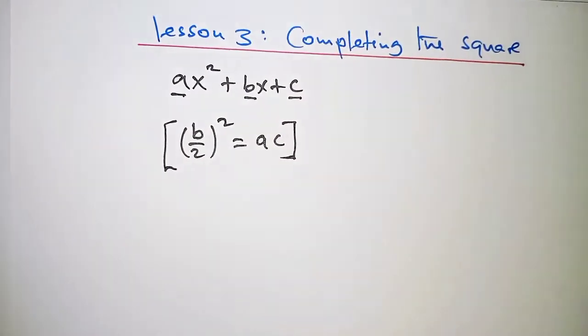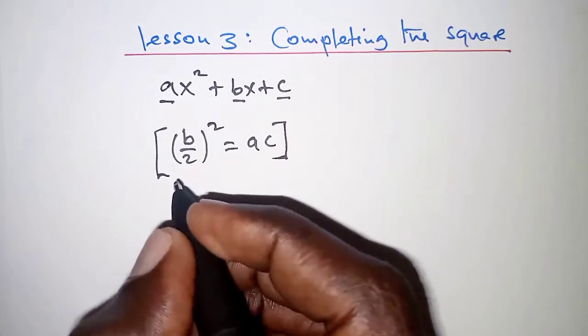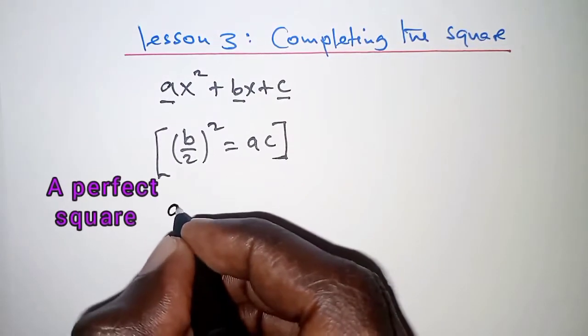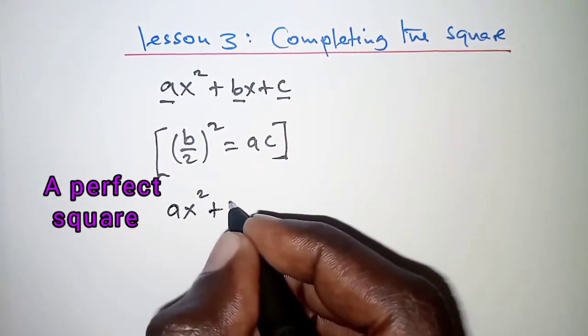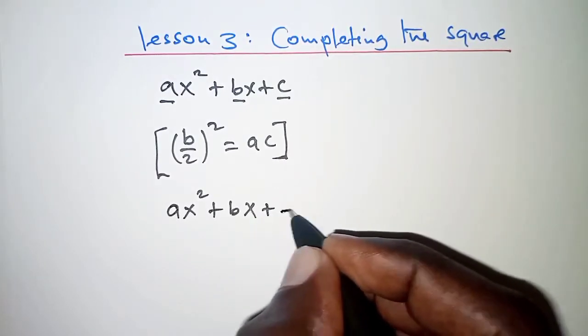In this lesson, what we are simply going to do is, if we are given a quadratic expression, say ax² + bx, and then there is a term that is missing, for example,